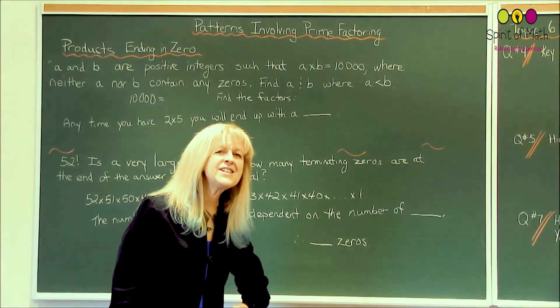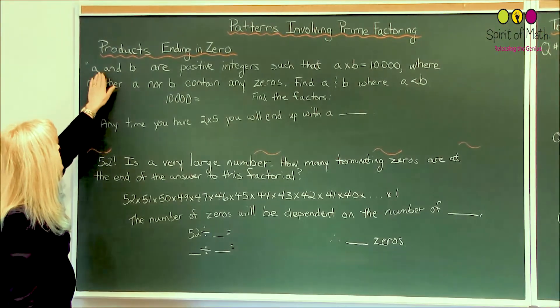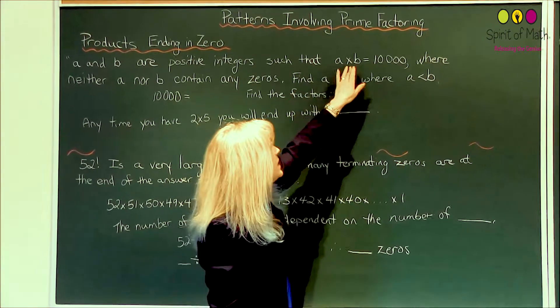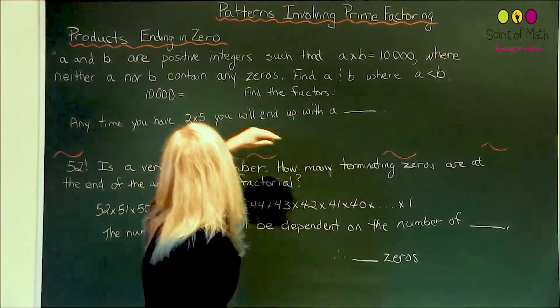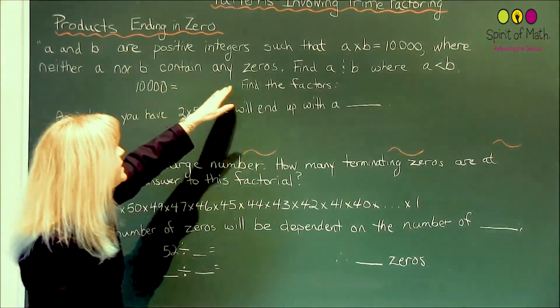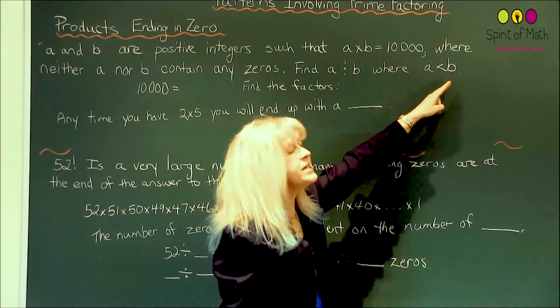So let's look at this question. A and B are positive integers such that A times B equals 10,000, where neither A nor B contain any zeros. Find A and B where A is less than B.